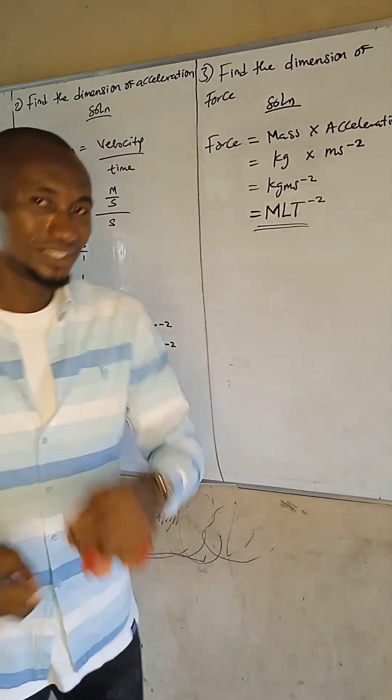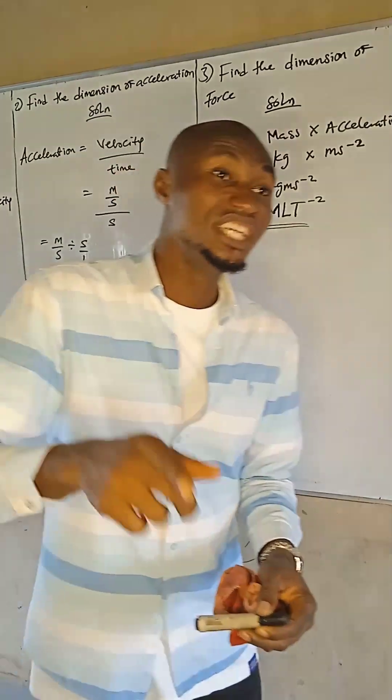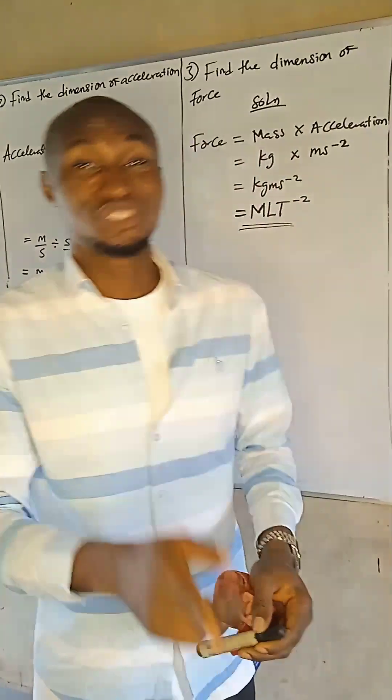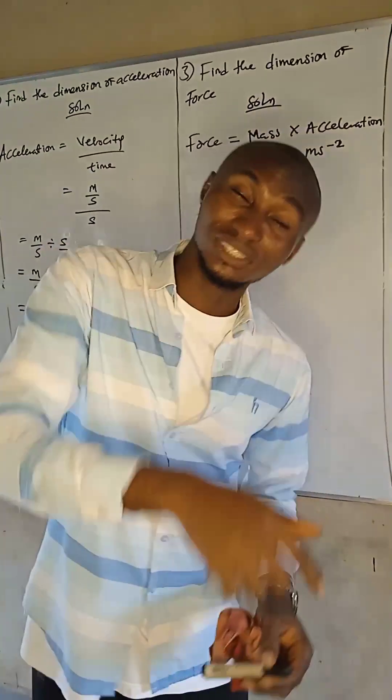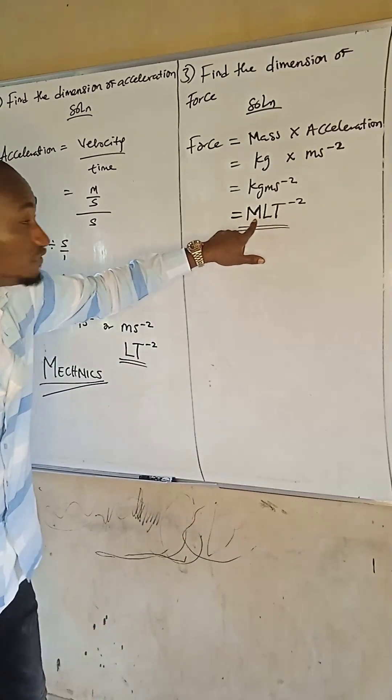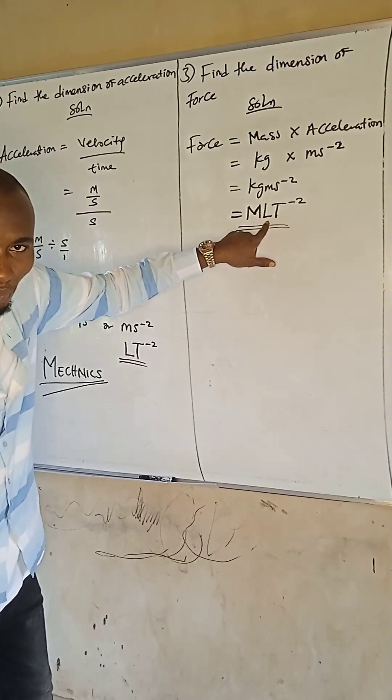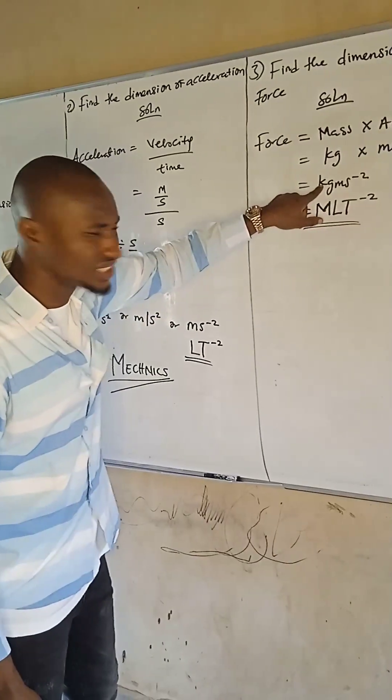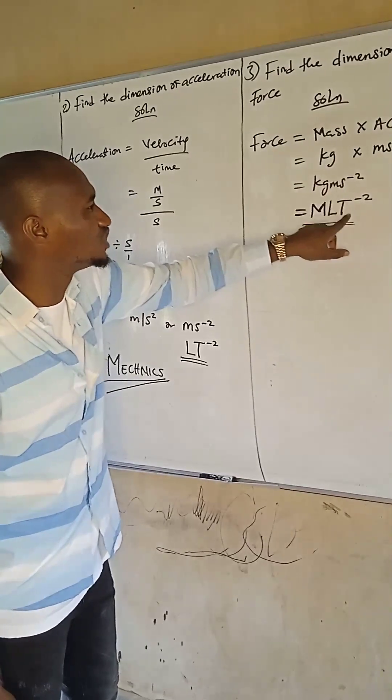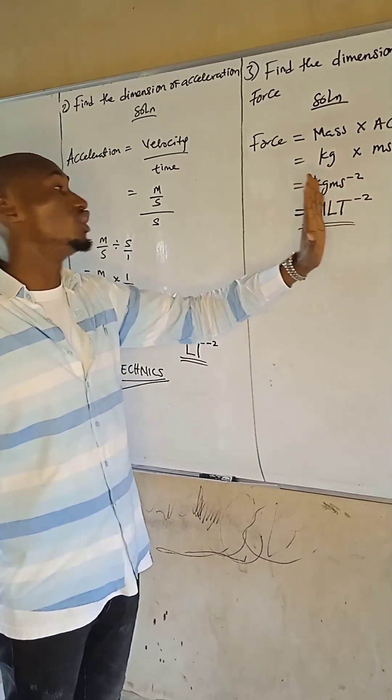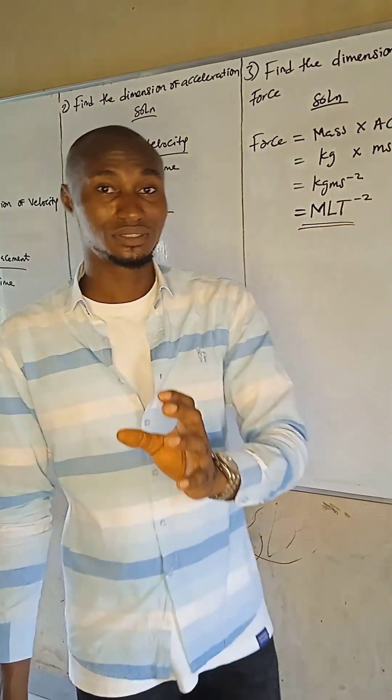Don't forget that dimension is the way in which physical quantities are related or associated to fundamental quantities. Now, what is the physical quantity here? M (mass) is a physical quantity, length is a physical quantity, time is a physical quantity. The unit of mass here is kg, unit of length here is meters, unit of time is seconds.